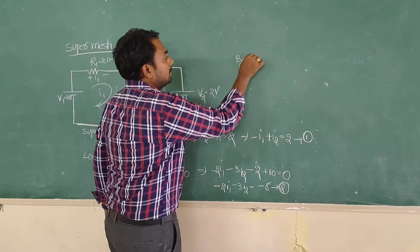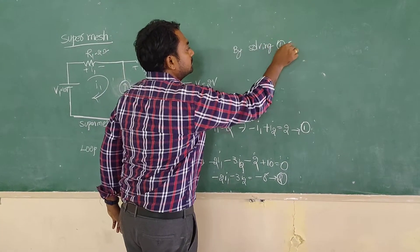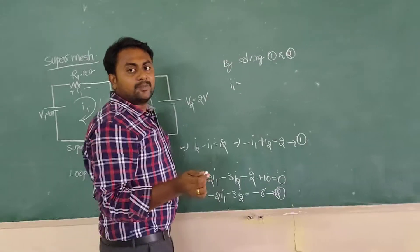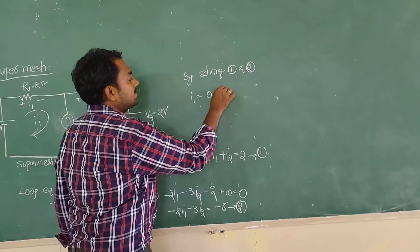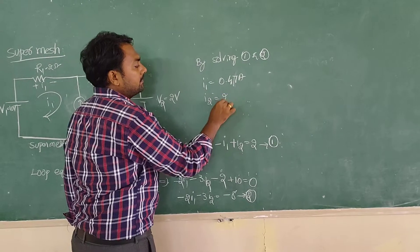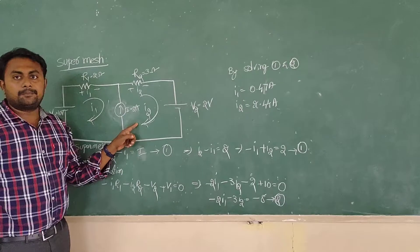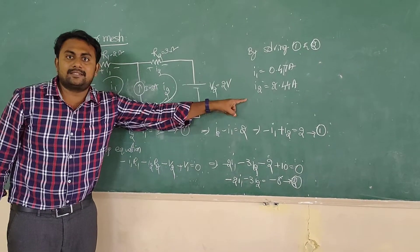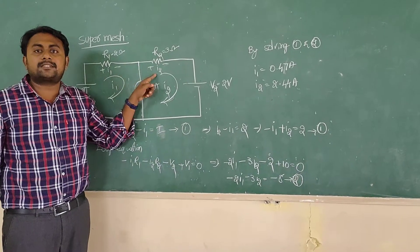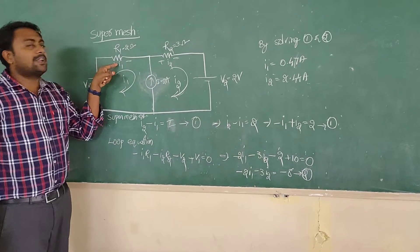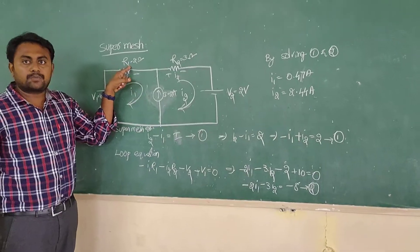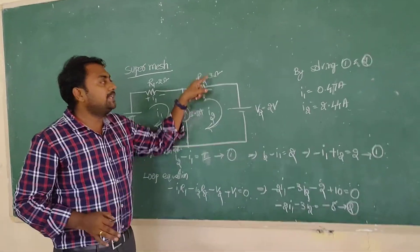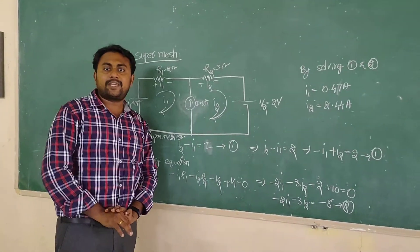By solving equations 1 and 2 together: minus I1 plus I2 equals 2 (equation 1), and minus 2I1 minus 3I2 equals minus 8 (equation 2). We get I1 equals 0.47 amps and I2 equals 2.44 amps. To find the voltage drop across each resistance: voltage drop across R1 is I1 times R1, which is 0.47 times 2; voltage drop across the 3-ohm resistance is I2 times 3, which is 2.47 times 3. This is how we solve super mesh problems.